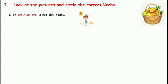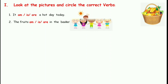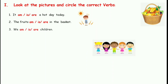Here you have a basket of fruits. The sentence is: The fruits blank in the basket — with options am, is and are. Fruits is the plural form of noun, so the correct verb is are. You will circle are and read: The fruits are in the basket. Next, we have some children. The sentence is: We blank children. Children is plural, so the verb are is correct. You will circle are and read: We are children.